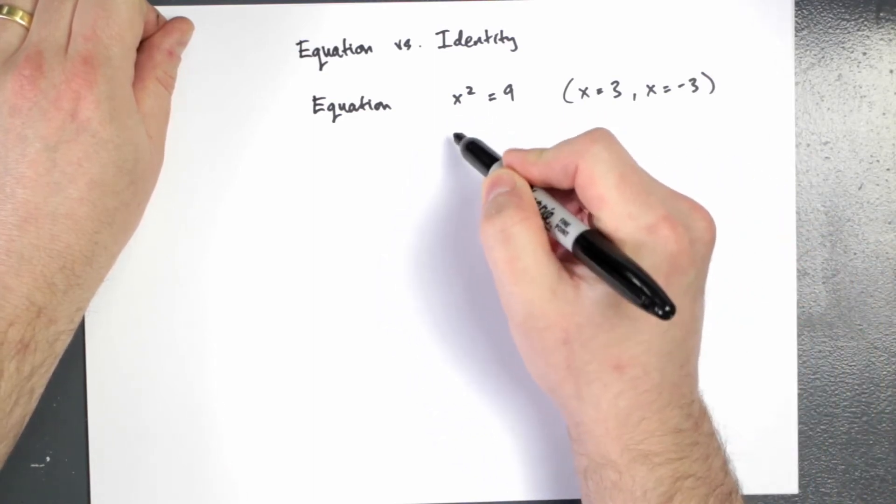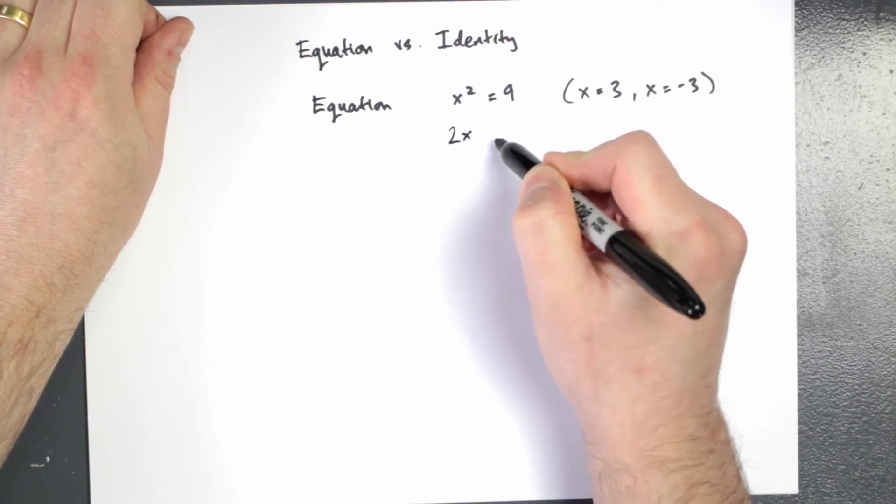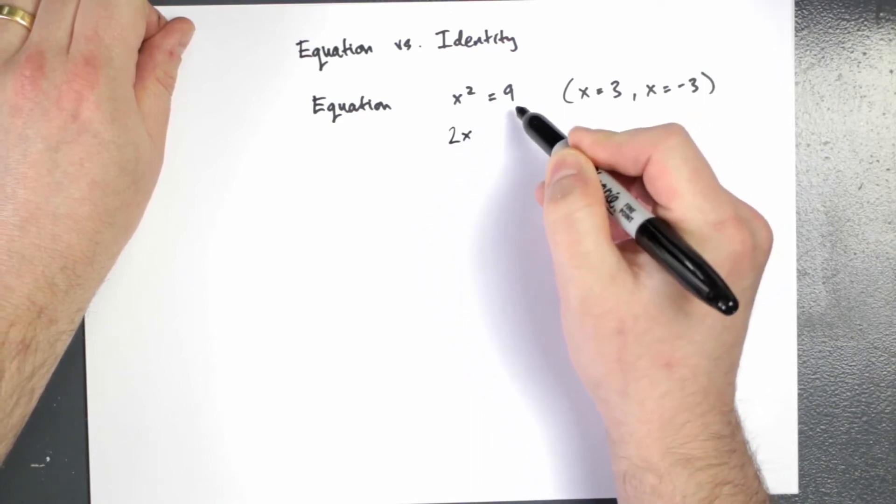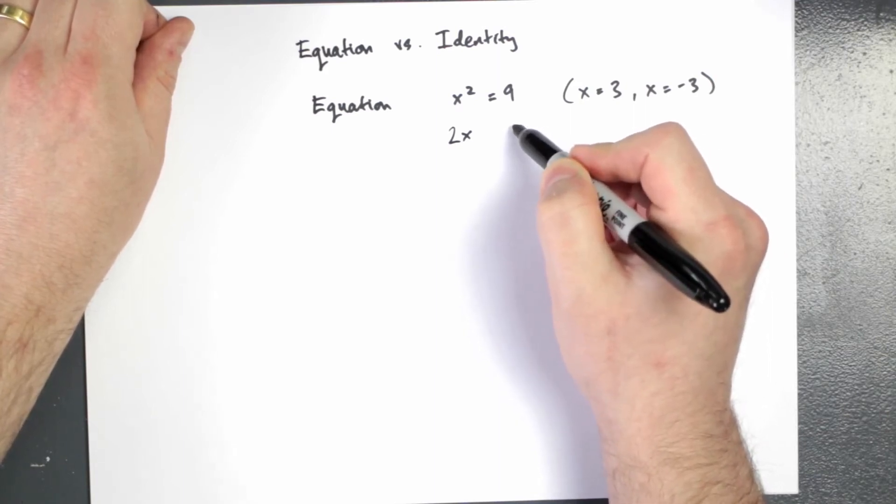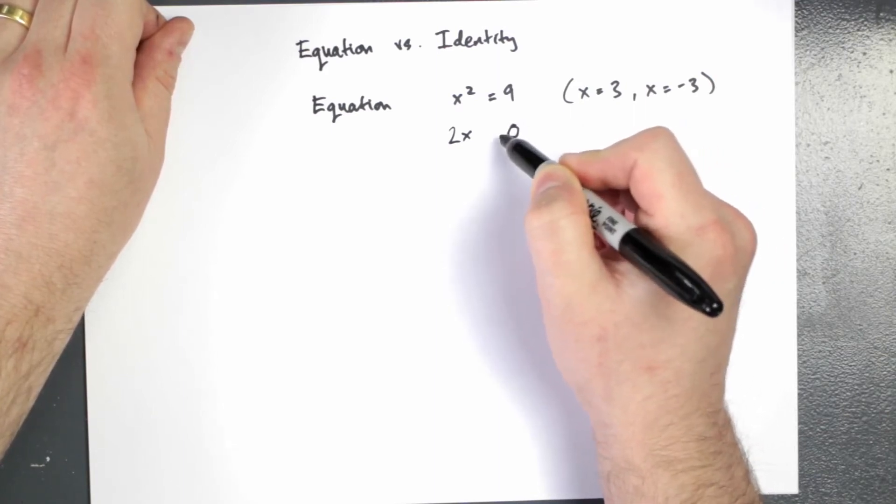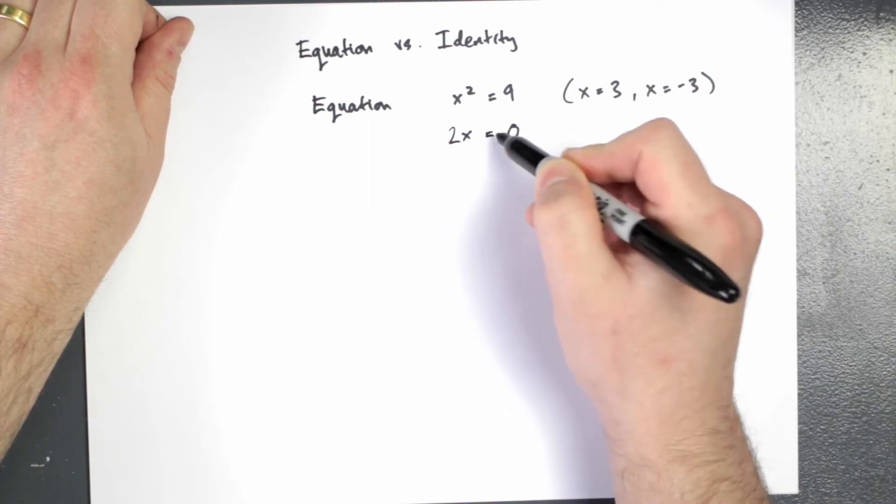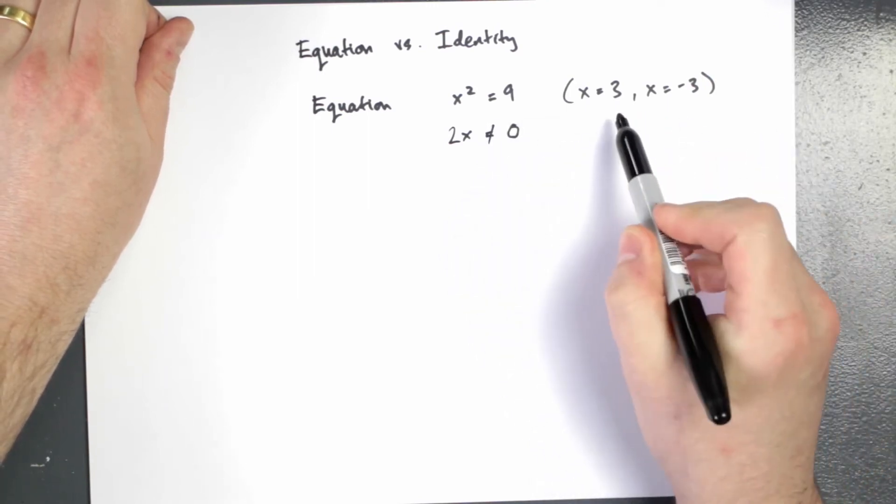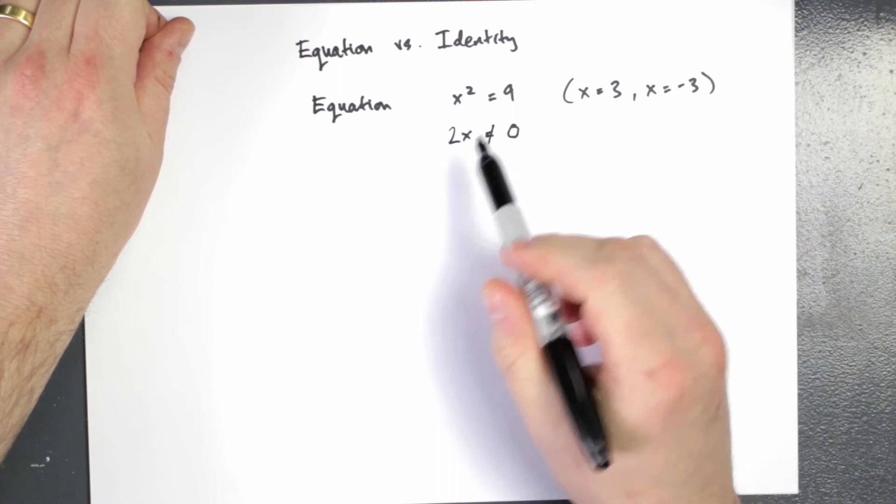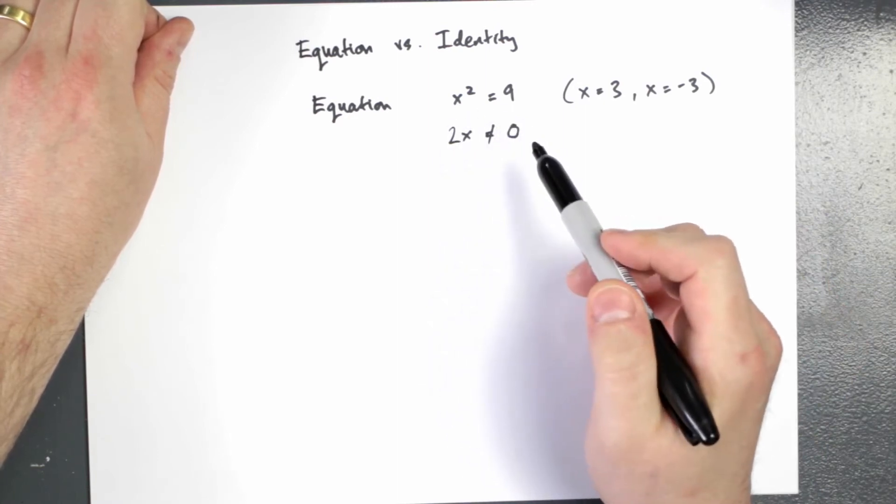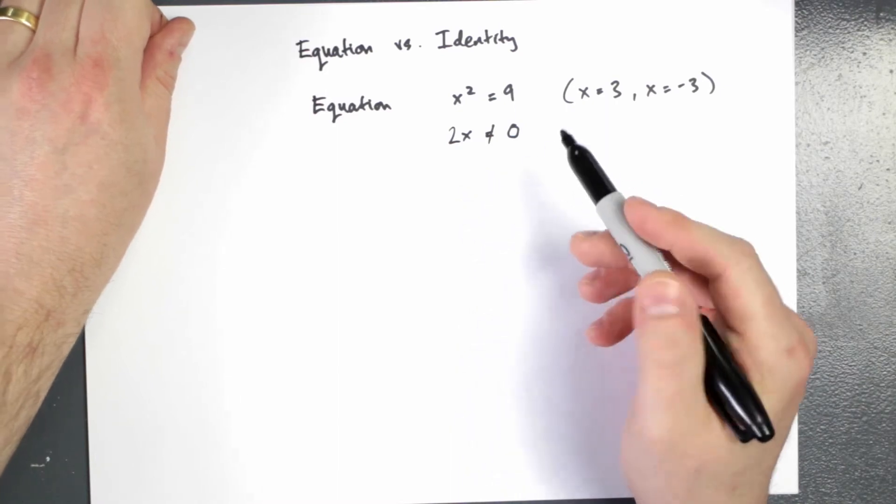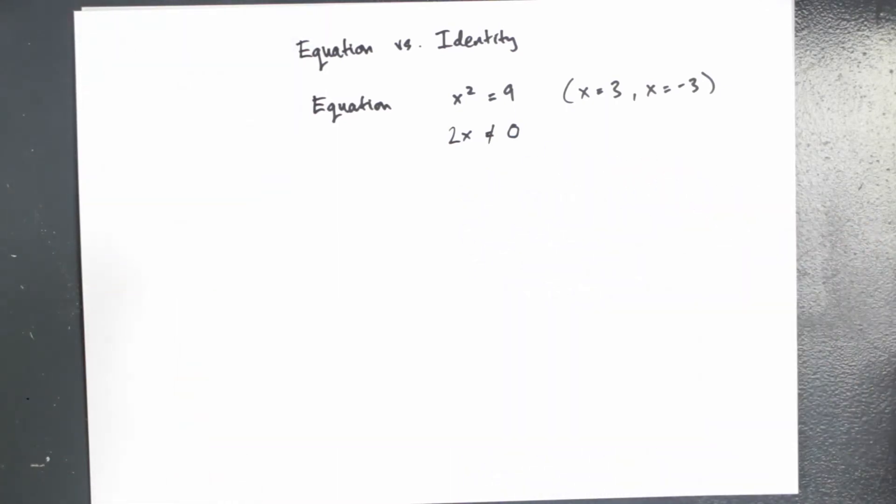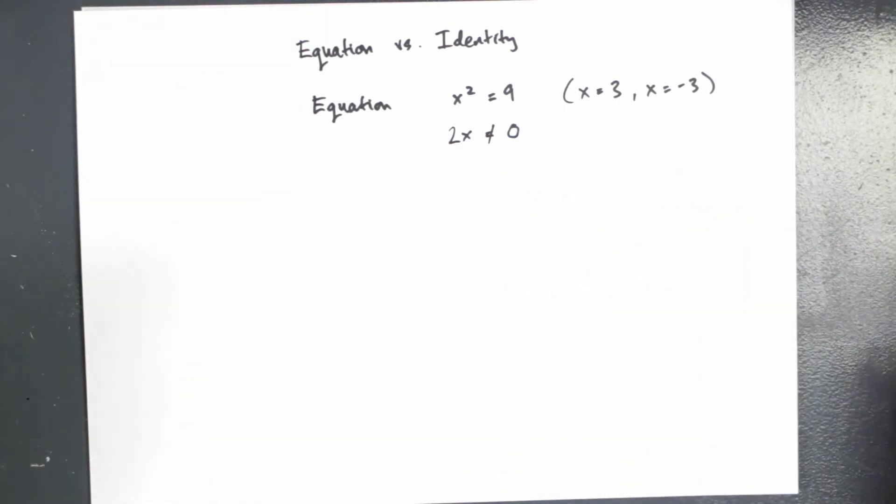Well, let's just check. If we differentiate x squared, we get 2x, and if we differentiate 9, which is just a number with respect to x, we just get 0. And of course, 2x does not equal 0, because x is either 3 or minus 3. So differentiating both sides of this equation led to... it broke the equation. So just remember that if we have an equation, we can't just differentiate both sides of it.